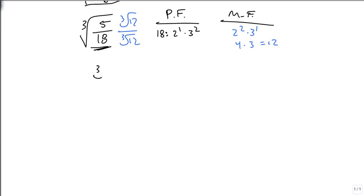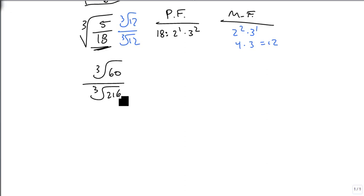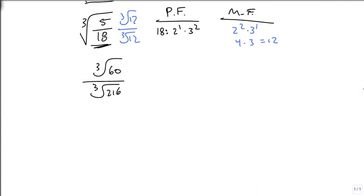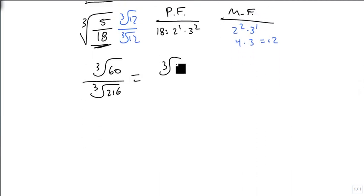So the cube root of 5 times the cube root of 12 is the cube root of 60. And the cube root of 18 times the cube root of 12 is the cube root of 216. So the cube root of 216 becomes the cube root of 60 over 6.